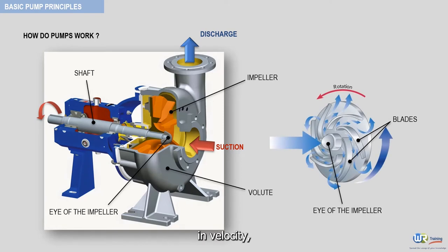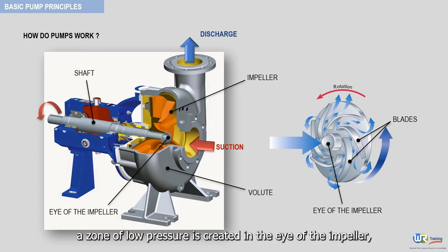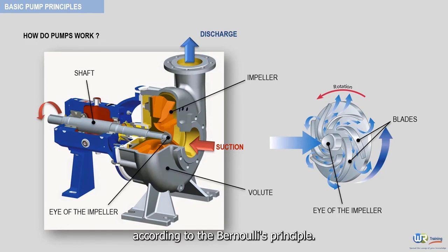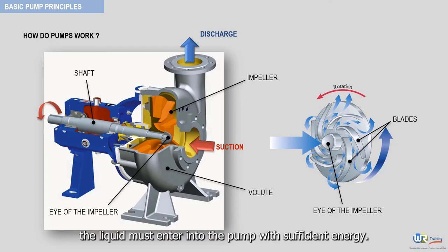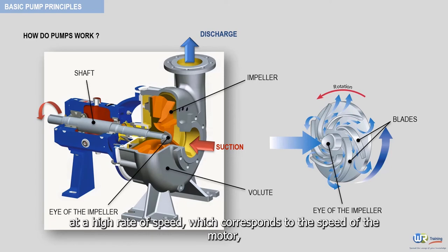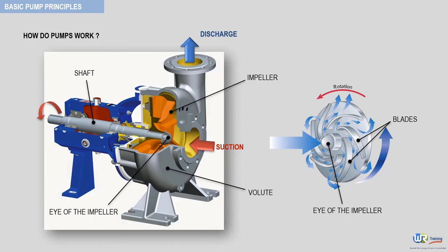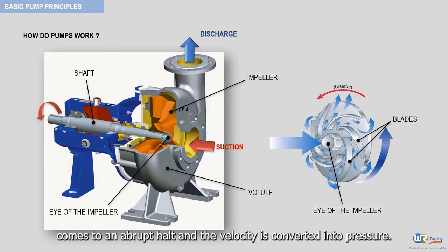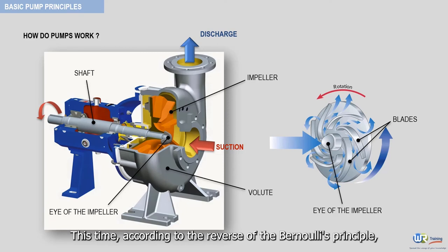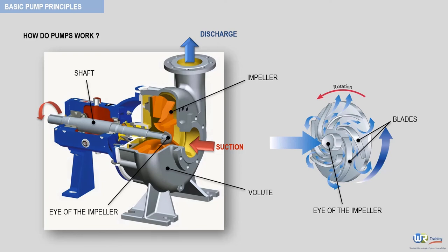As the fluid accelerates in velocity, a zone of low pressure is created in the eye of the impeller, according to Bernoulli's principle — as velocity goes up, pressure goes down. This is another reason the liquid must enter into the pump with sufficient energy. The liquid then leaves the outside diameter of the impeller at a high rate of speed, corresponding to the speed of the motor, and immediately slams into the internal casing wall of the volute. At this point, the liquid's centrifugal velocity comes to an abrupt halt and the velocity is converted into pressure.